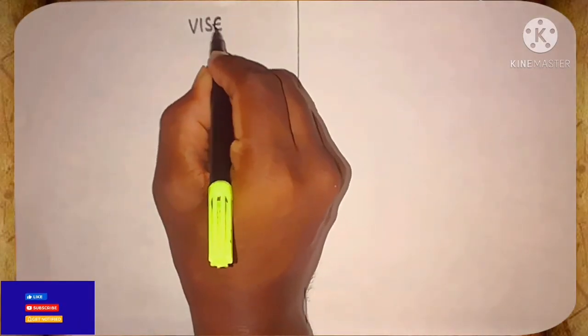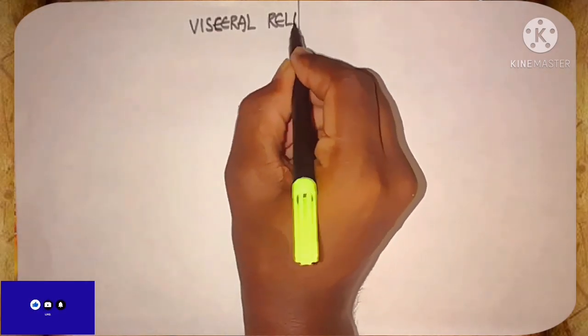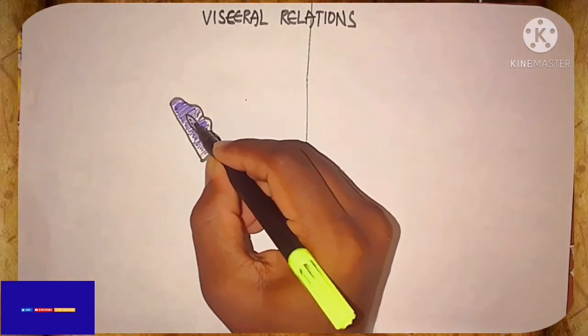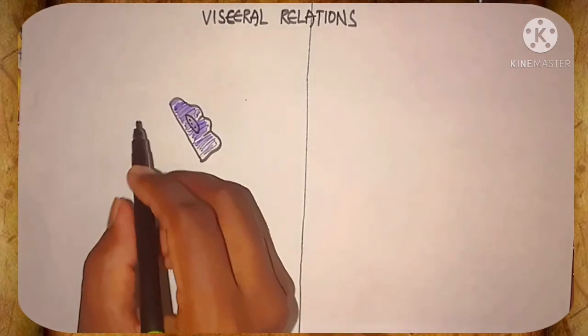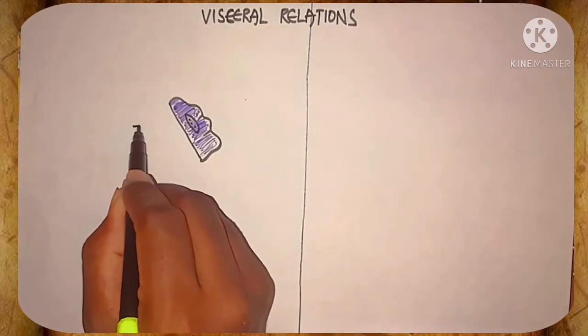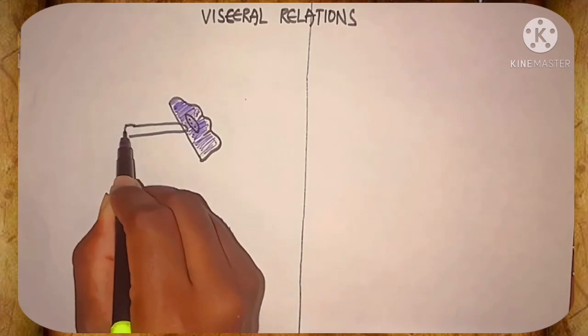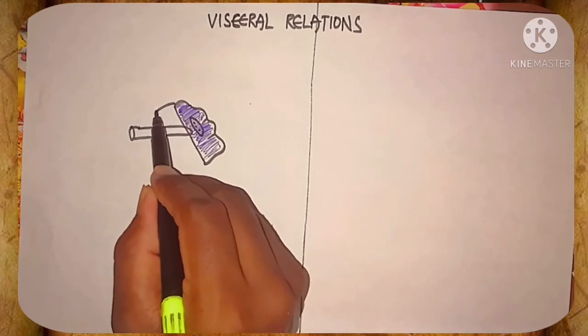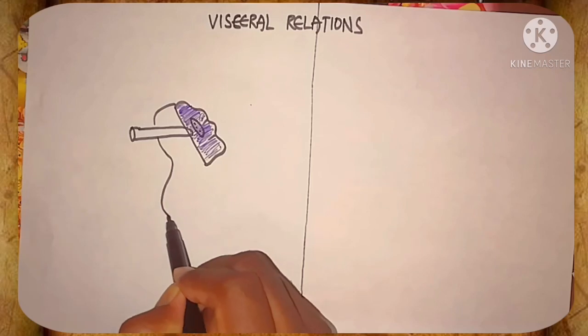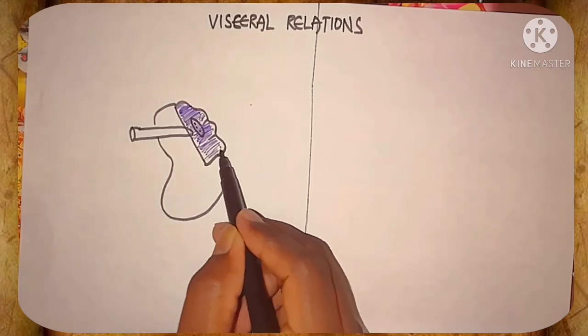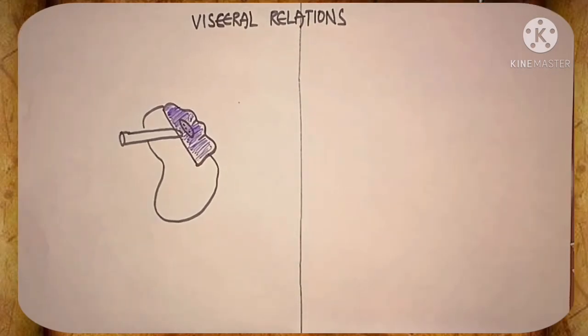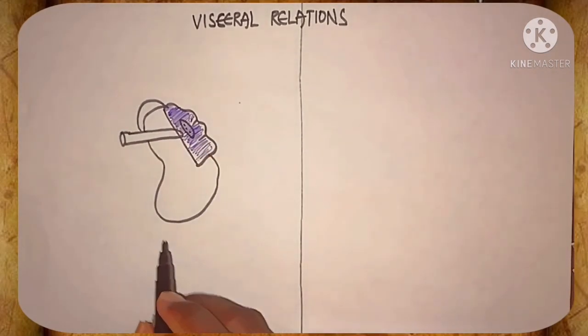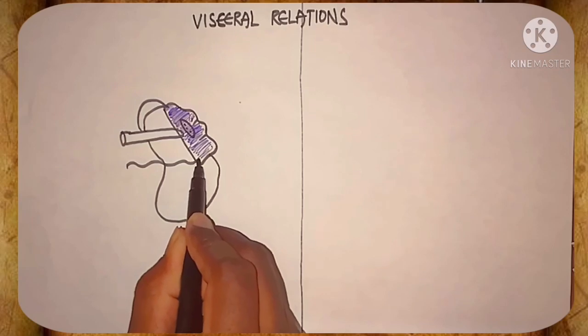Let's discuss the visceral relations to the spleen. The visceral relations relating with the spleen are the tail of the pancreas in the spleen and the splenic flexure.